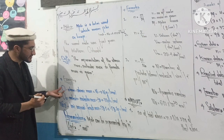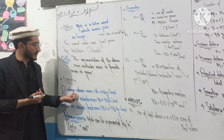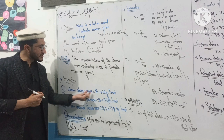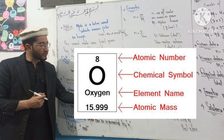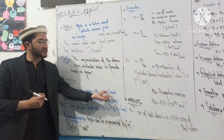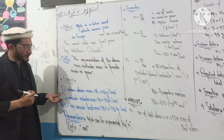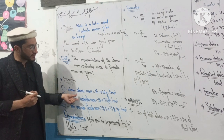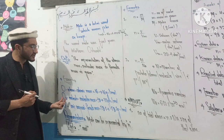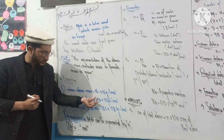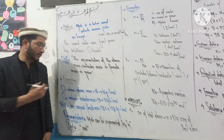For example, consider oxygen. The atomic mass of oxygen is 16 g/mol. For molecular oxygen O₂, we use two oxygen atoms: 16g plus 16g equals 32g. So the molecular mass of O₂ is 32 g/mol.